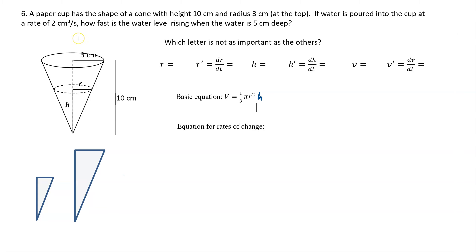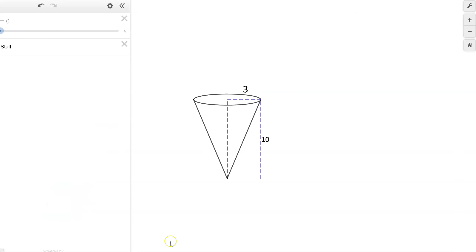We're going to start some more related rate problems. The first one is our standard one — it's a paper cup, basically the volume of a cone. What's going to happen is you're going to put some water in the cone and it's going to fill up.